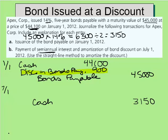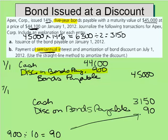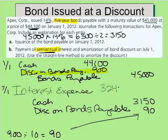The way we do that is take the $900 and divide it by the number of interest payments we're going to make. It's a five-year bond with semi-annual payments — twice a year — so five times two equals ten interest payments total. That means we write off $90 of the bond discount with every interest payment. So we credit discount on bonds payable $90, and then debit bond interest expense for $3,240, which is my two credits added together.